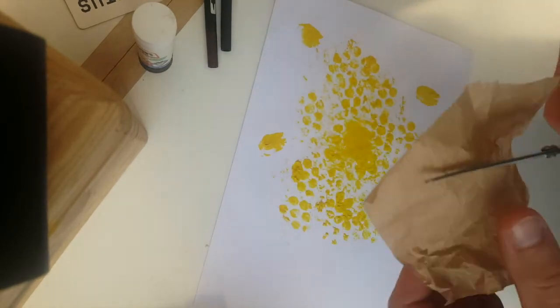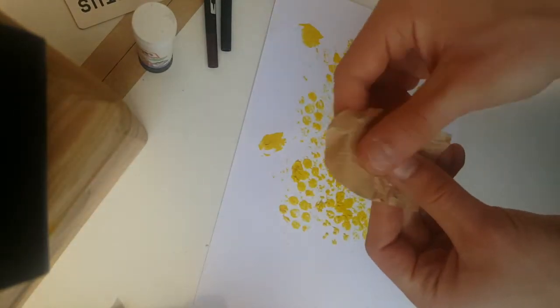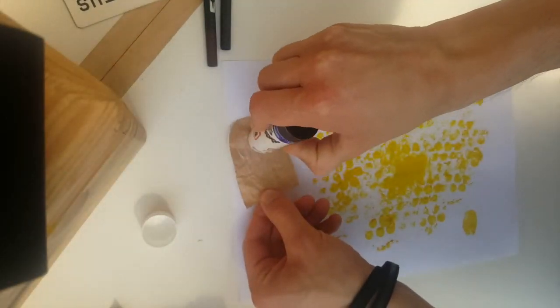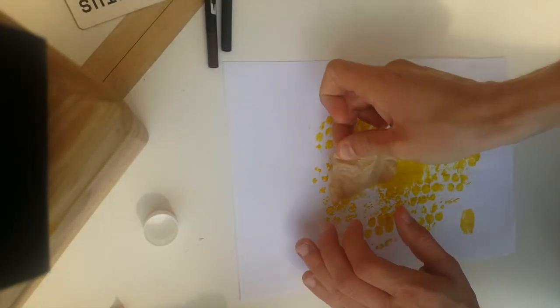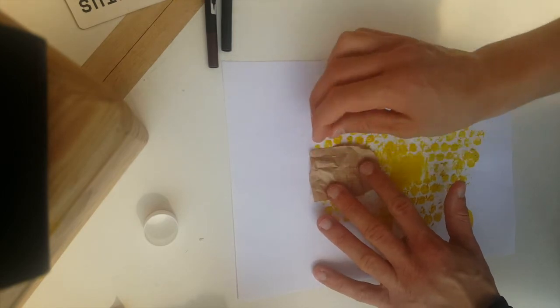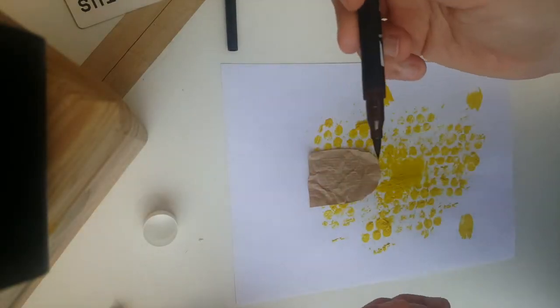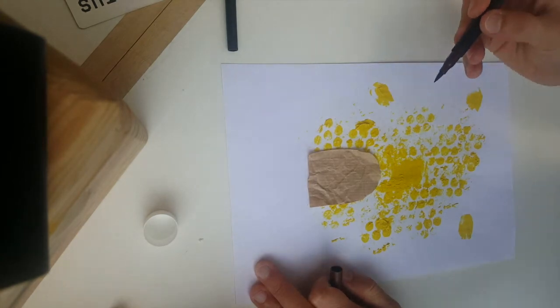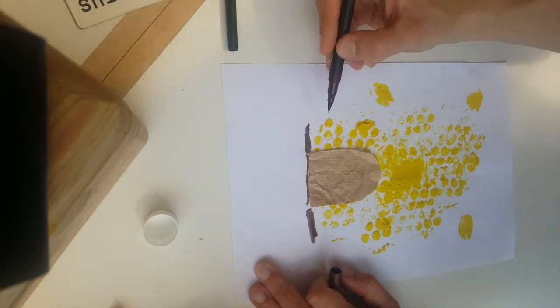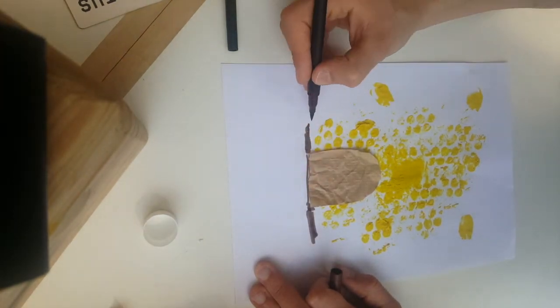We're going to put some glue on the back of that, and we're going to stick that at the bottom of our picture. Then we're going to grab our pens, we're going to start off with our brown pen, and we're going to sort of try and follow the outline of what we've painted.